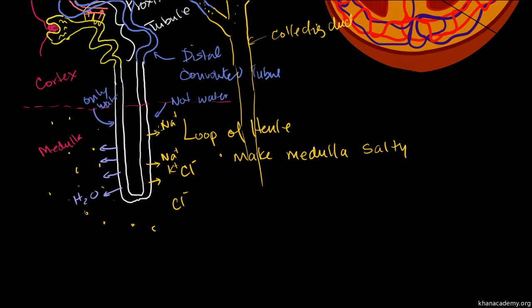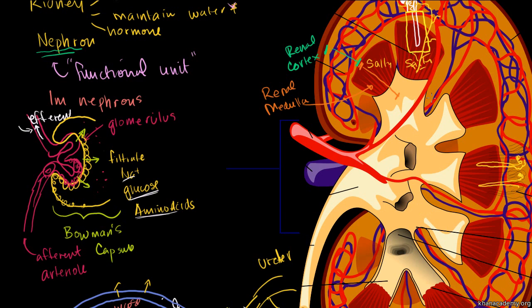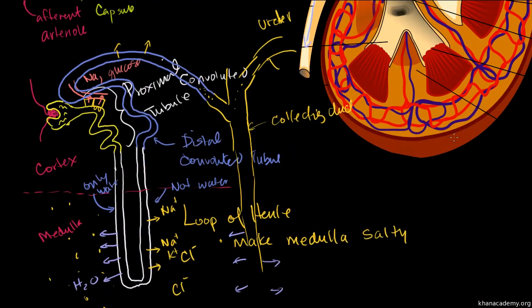The collecting duct goes back further into the medulla — the salty part again. Because it passes through that super salty spot in the medulla, we have hormones called antidiuretic hormone that can dictate how porous the collecting tube is. If it makes it very porous, it allows more water to leave as we go through the medulla, making the filtrate — which we can now start calling urine — even more concentrated, so we lose even less water. It keeps collecting until it leaves the kidney via the ureters to the urinary bladder. The neatest part, in my mind, is how the loop of Henle actively manages water reabsorption.